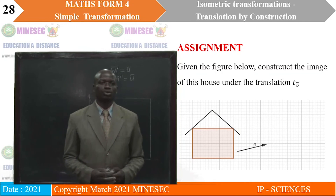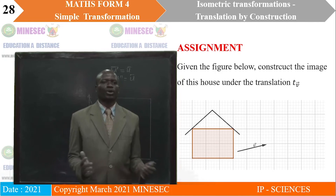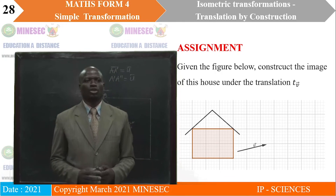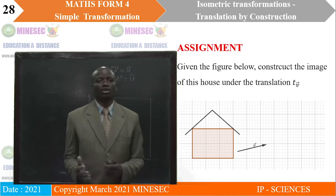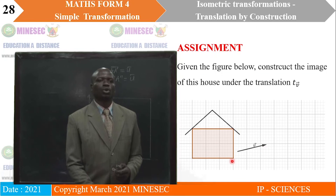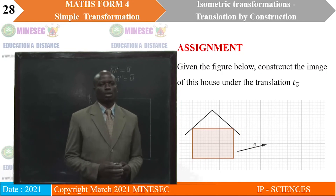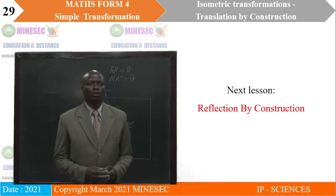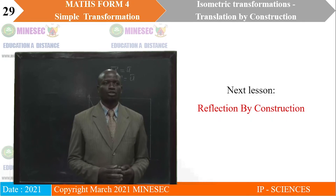You will also be expected to do something like this to reinforce what you have learnt — use a square exercise book or graph paper. Given the figure below, which is a sketch of a house, construct its image under the translation T with translation vector V. Draw from each point to its image parallel to and equal to vector V to find the new position. This brings us to the end of the lesson. In the next lesson, we will be looking at reflection by construction.